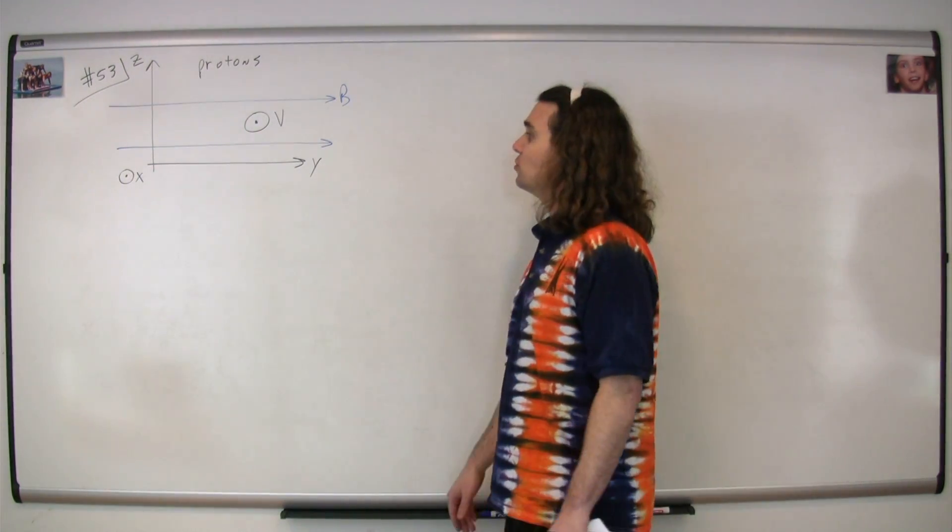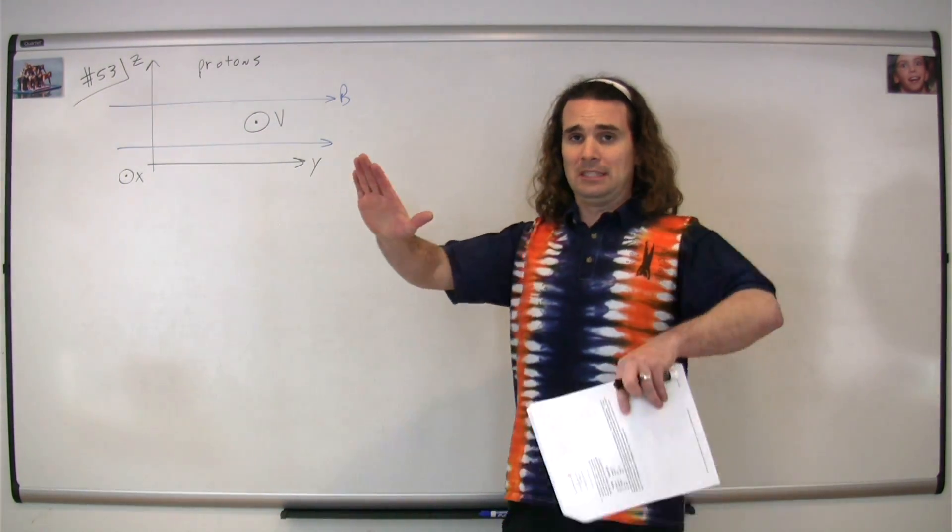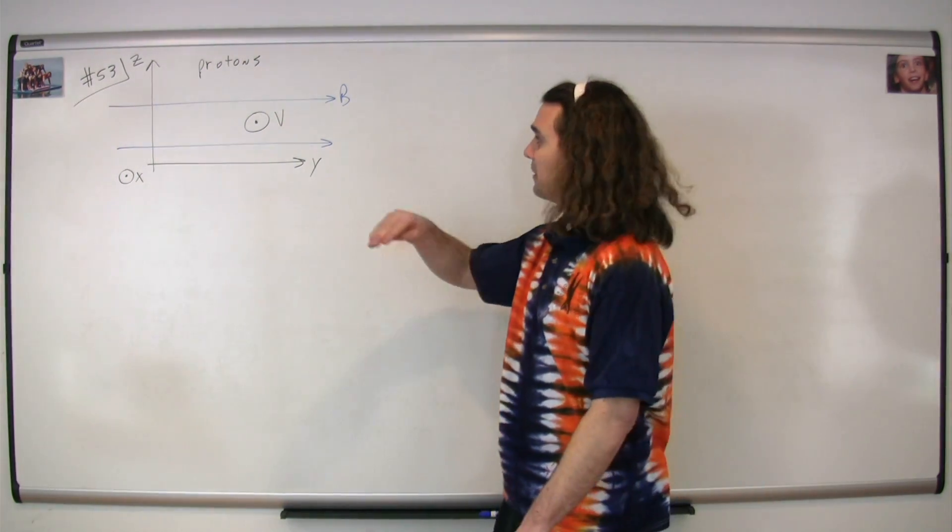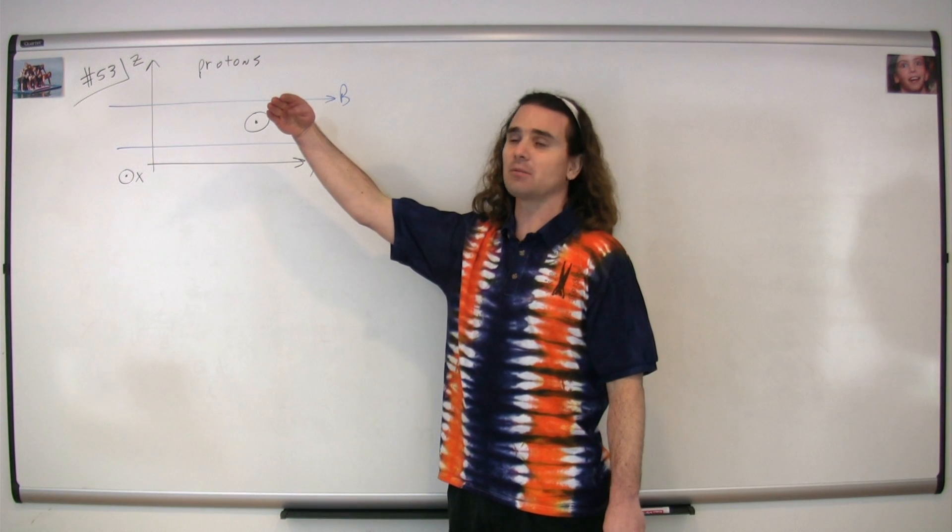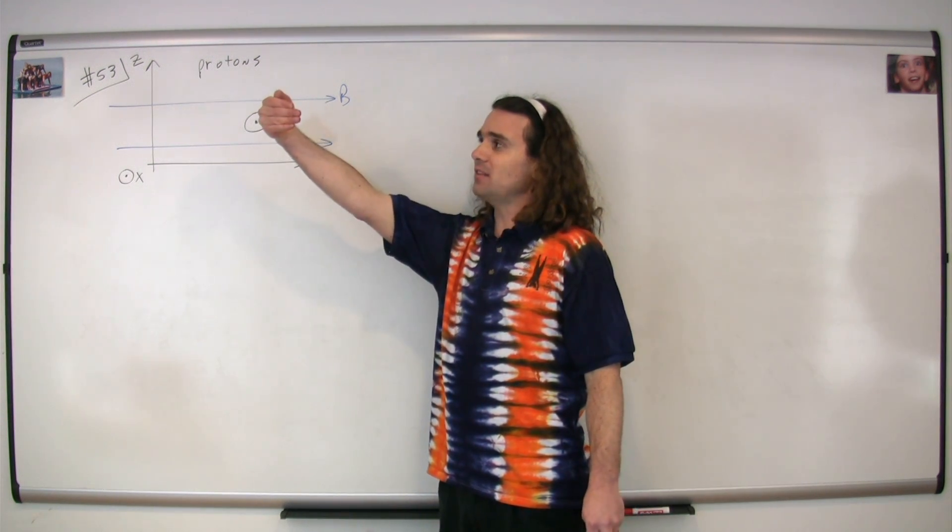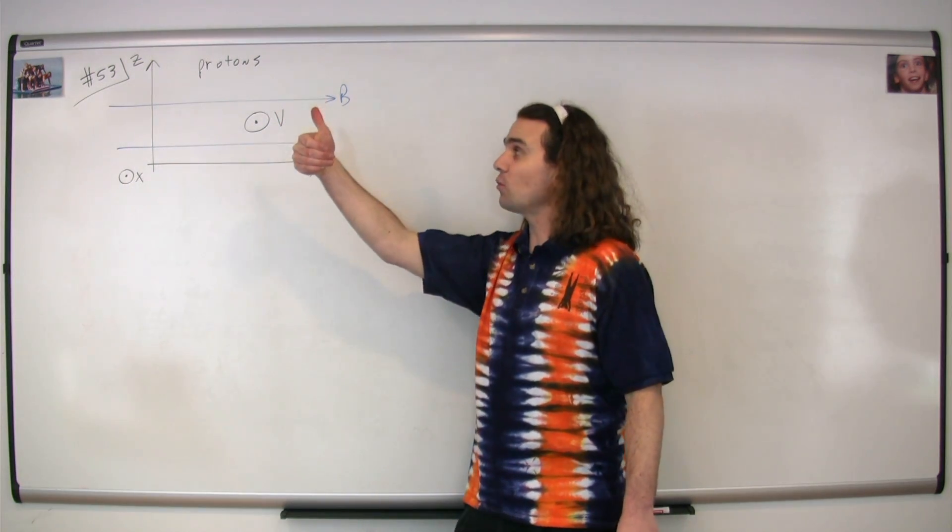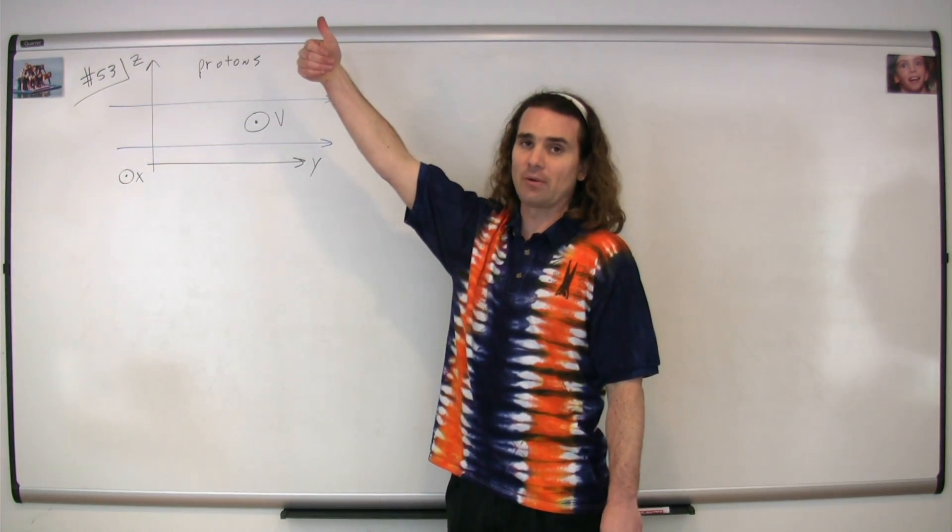We are going to use the right-hand rule to figure out the direction of the magnetic force on this beam of protons. We point our fingers in the direction of the velocity of the protons, we curl our fingers in the direction of the magnetic field, our thumb points in the direction of the magnetic force which is going to be in the positive z direction.